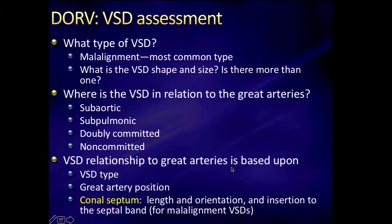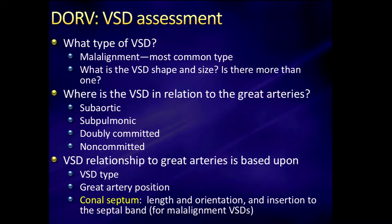The VSD is probably the number one thing you want to focus on. Is it a malalignment-type VSD? That's the most common type you're going to see with DORV. What is its shape and size, and is there more than one? The most common classification scheme is where is the VSD in relation to the great arteries. Taking four basic buckets: VSDs are either subaortic, subpulmonary, doubly committed, or non-committed. The VSD relationship with the great arteries is based not only on VSD type, but also great artery position and the conal septum — its length, orientation, and insertion to the septal band.